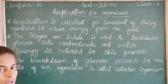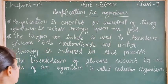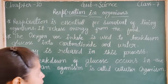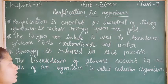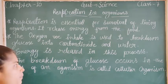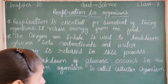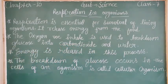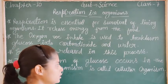Glucose ko carbon dioxide aur water mein break down karti hain. Energy is released in this process. The breakdown of glucose occurs in the cells of an organism.